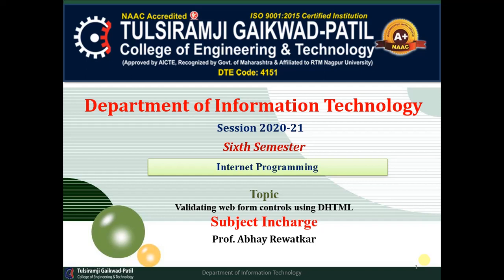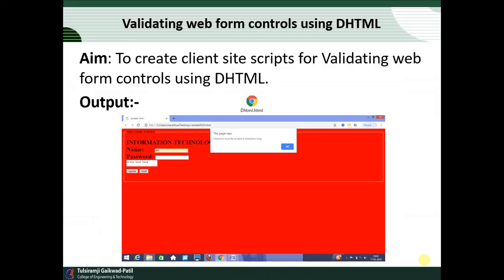Today we are going to discuss and execute practical number three, called validating the web form control using the DHTML concept in the Internet Programming subject. The aim of this practical is to create a client-side script for validating web form controls using DHTML. Here you can observe the form includes fields for name, password, some text, and we have Register and Reset buttons as the most important fields to validate.